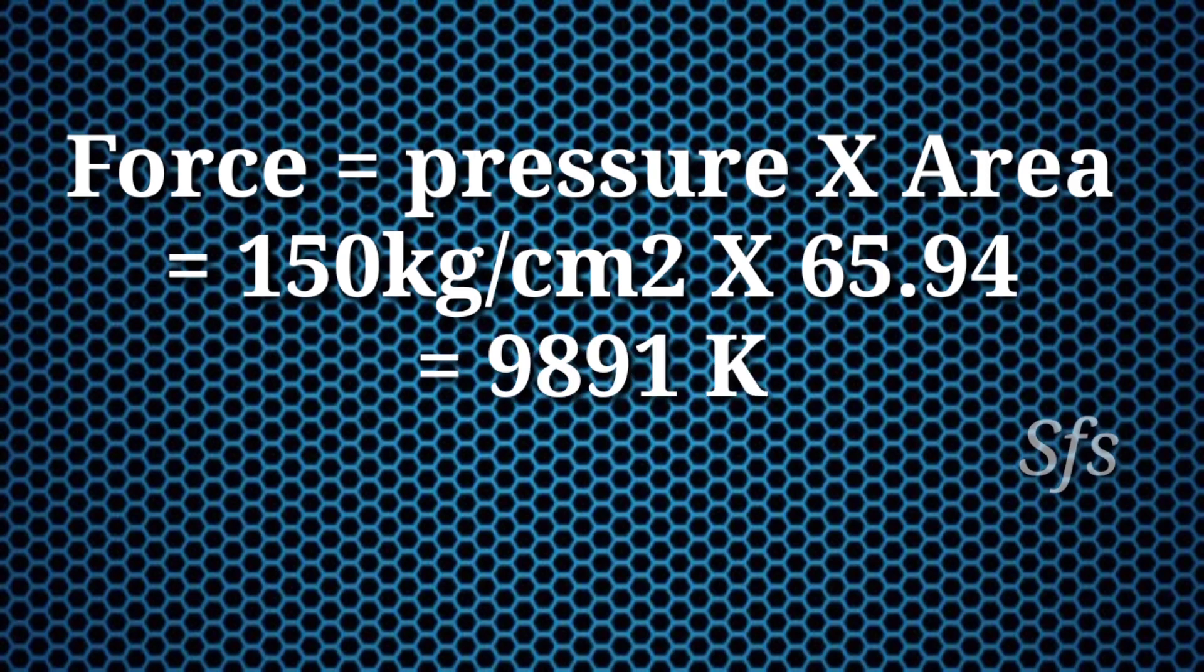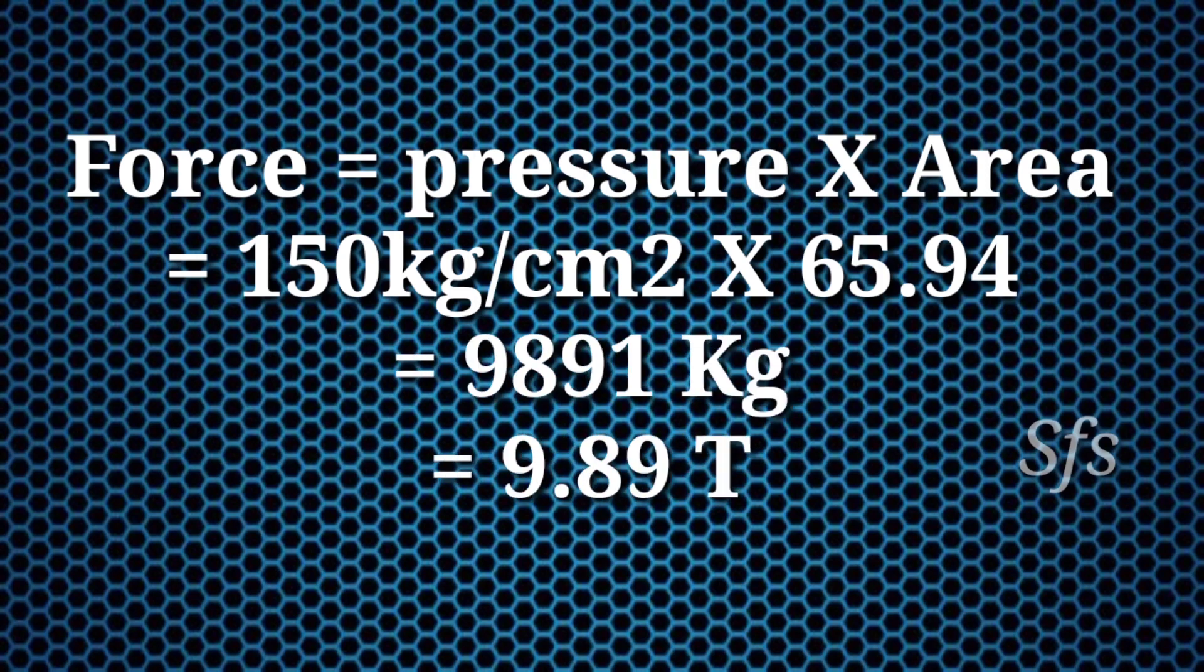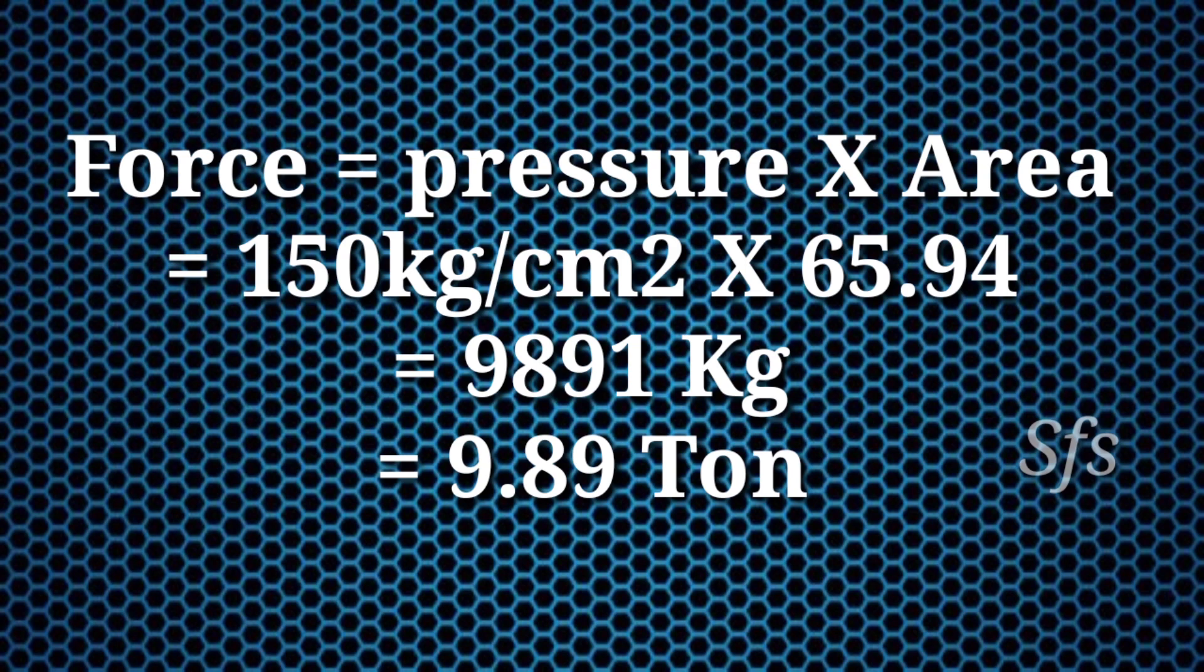Again, we apply the formula: force equals pressure multiply by area. Pressure is 150 kg per centimeter square and area is 65.94 cm squared. We get answer 9,891 kg, which equals 9.89 tons. In the backward direction of a piston, it produces force equal to lift a load of 9.89 tons.